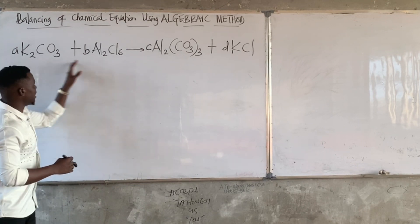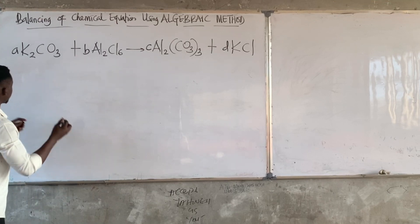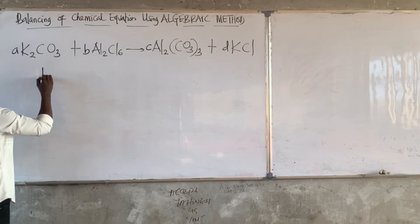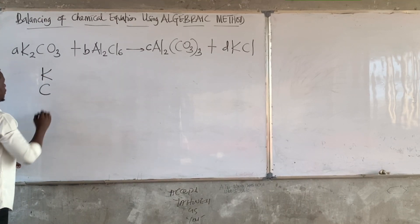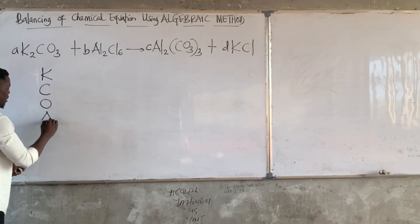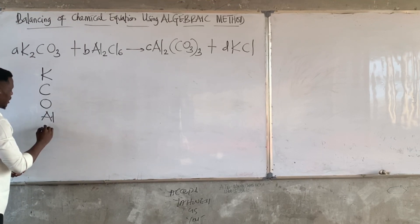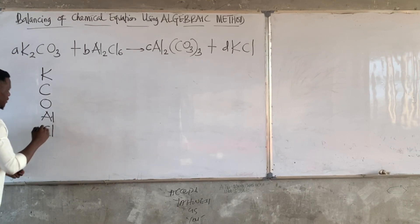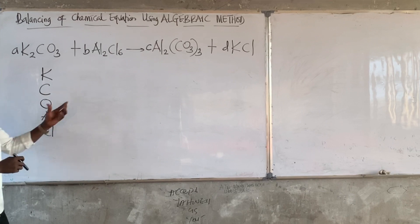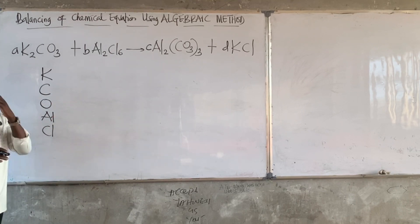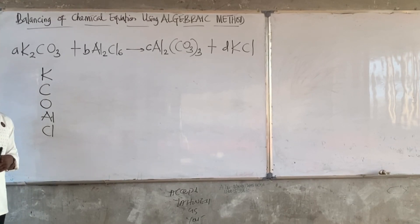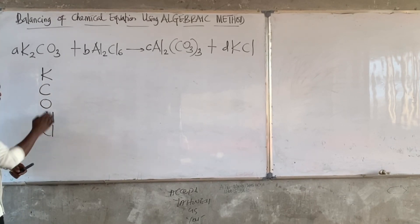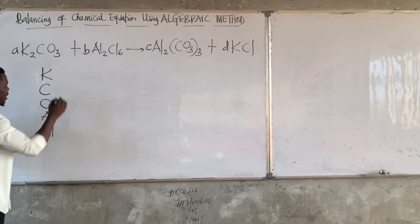How many types of elements can be found here? Let's check it out. We have potassium (K), carbon, oxygen, aluminum, and chlorine. We have five elements present in this compound. We are going to write a balanced chemical equation for each of these elements.